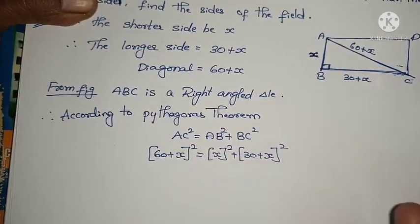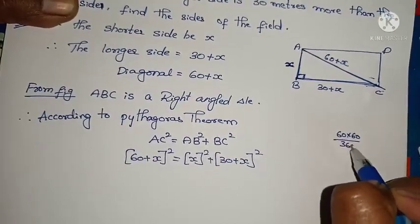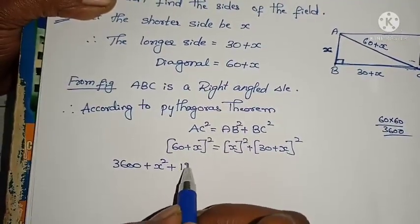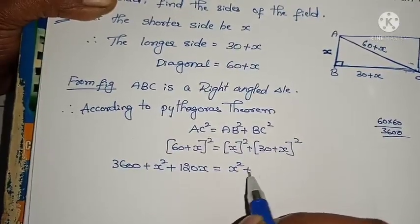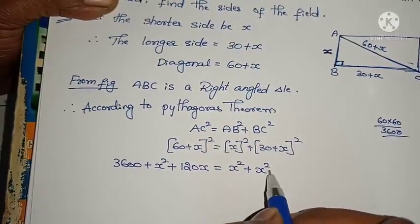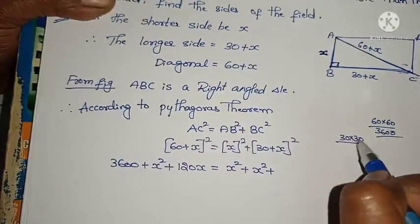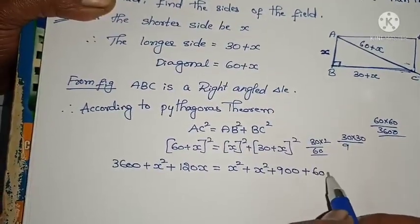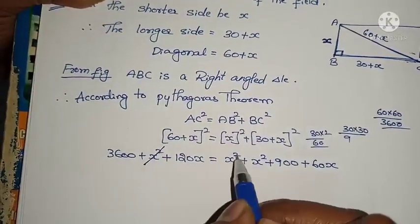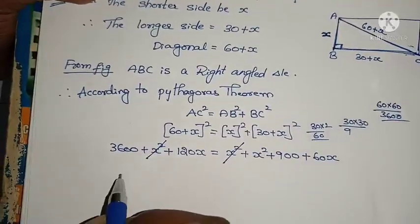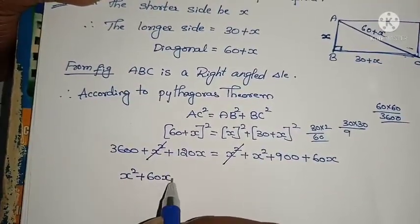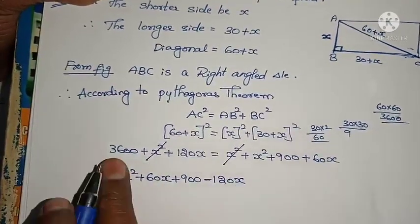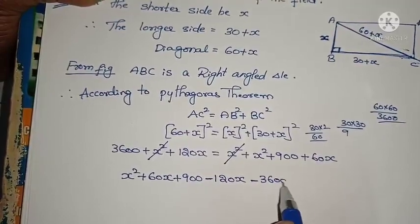Using the formula (A plus B) squared equals A squared plus B squared plus 2AB: left side gives 3600 plus X squared plus 120X. Right side gives X squared plus 900 plus 60X. The X squared terms cancel. Remaining: 3600 plus 120X equals 900 plus 60X. Sending all to one side: 120X minus 60X plus 3600 minus 900 equals 0 becomes 60X plus 2700 equals 0 after rearranging.